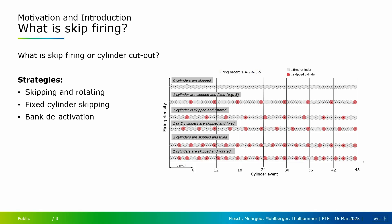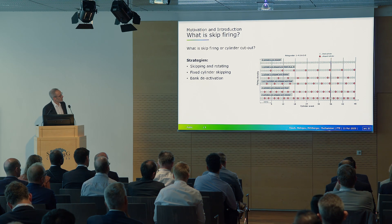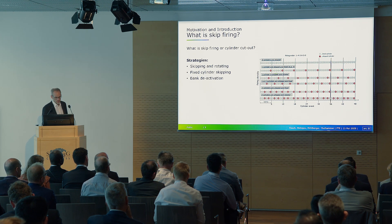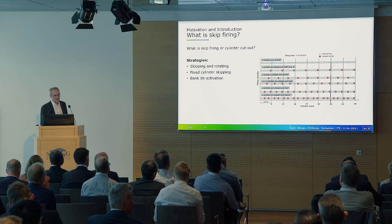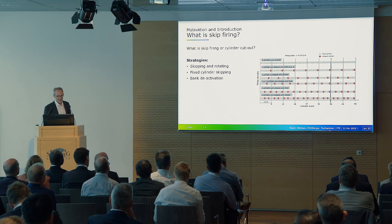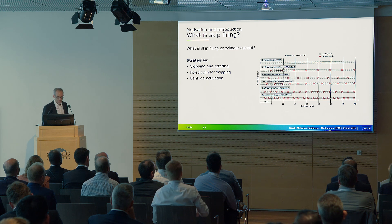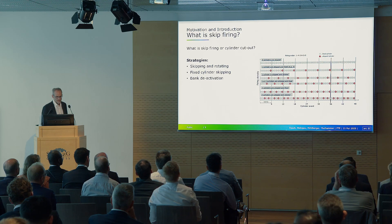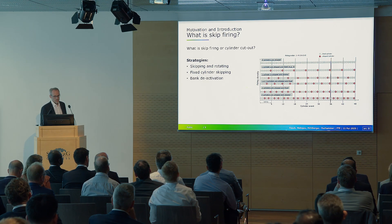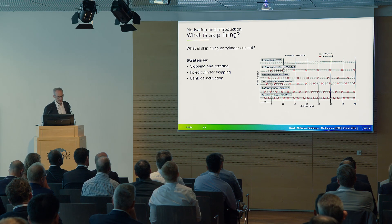We have shown here some scenarios illustrating the different approaches. The red dots mark the cylinder that is not fired. One strategy always leaves the sixth cylinder unfired — not clever, just a test baseline. The next one skips one cylinder but rotates it through cylinders five, four, three, two, one, six. You can also do this with two cylinders, or alternate cycle to cycle — one cylinder, two cylinders, one cylinder, two cylinders. There are really different strategies depending on the loads you want to implement.